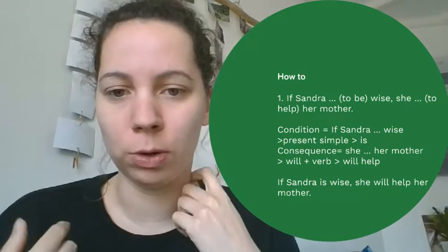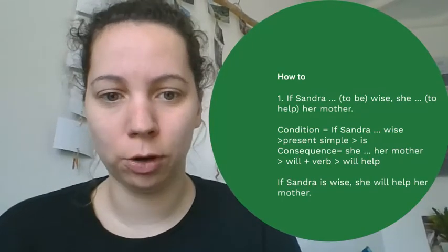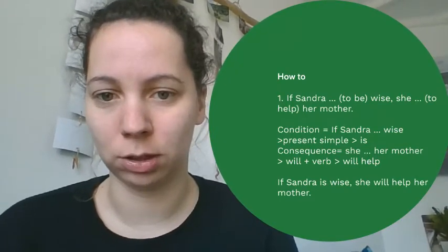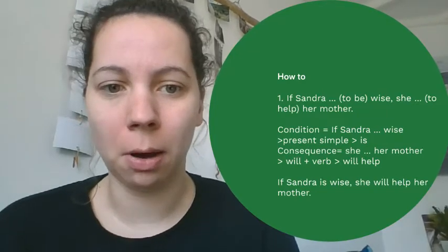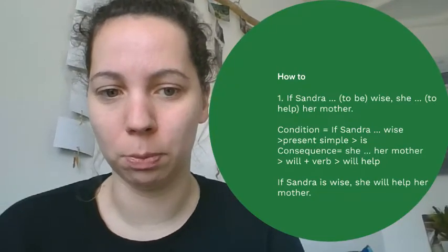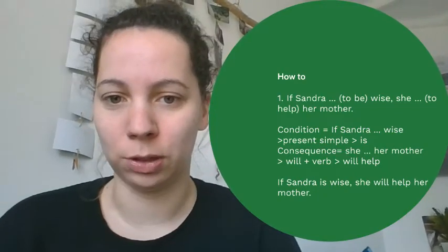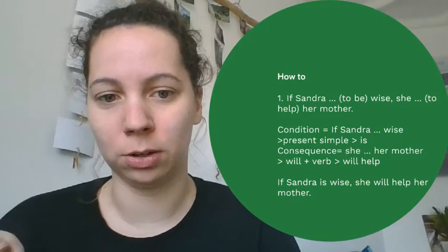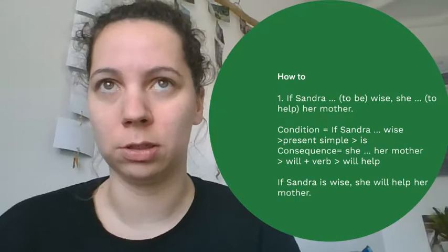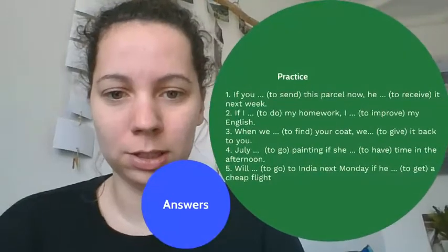Now think about the form. The condition part needs present simple, so 'to be' becomes 'is' for Sandra — 'she is.' The consequence part needs 'will' plus verb, so 'to help' becomes 'will help.' The full sentence is: 'If Sandra is [sick], she will help her mother.' So always find the condition and consequence, then apply: condition = present simple, consequence = will plus verb.